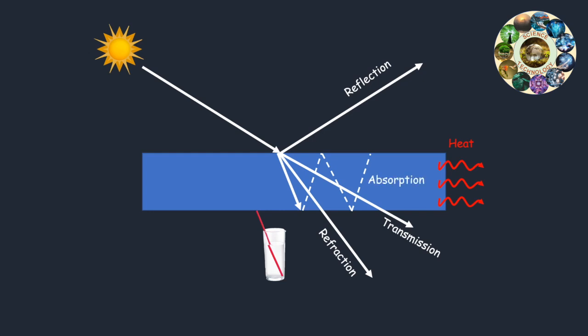So, when light interacts with an object, some could be reflected, absorbed, transmitted, or refracted. The light passes through objects in different ways. By considering these effects, materials can be grouped according to how they allow light to penetrate them.